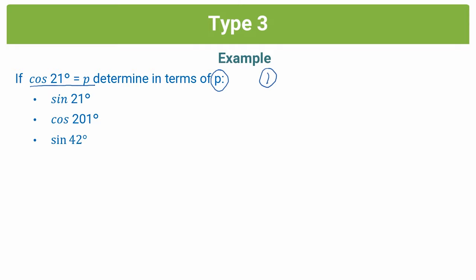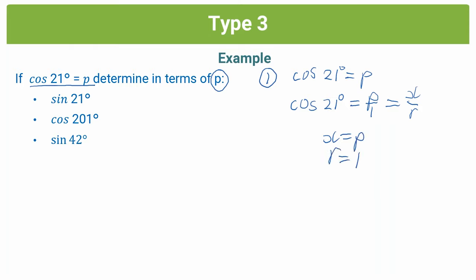Step one is to use Pythagoras to find our missing variable x, y, or r, using the same process as type 2 trig questions. We make sure we're in the form trig function equals number: cos 21 degrees equals p. We rewrite this as p over 1 to make it a fraction, since our trig ratio definitions are fractions — y over r, x over r, or y over x. Then we write our definition for cos, which is x over r, so x equals p and r equals 1. Now we use Pythagoras to solve for y.